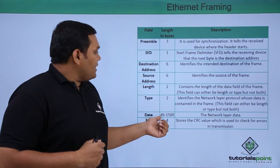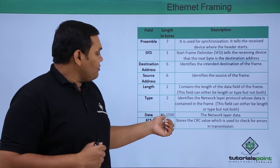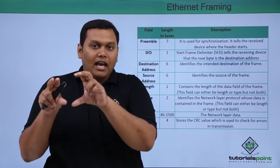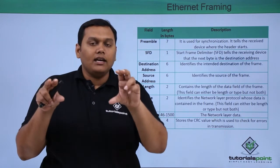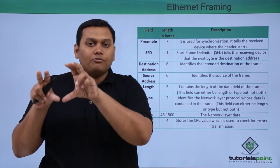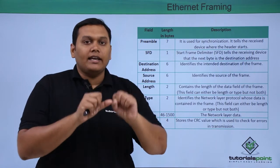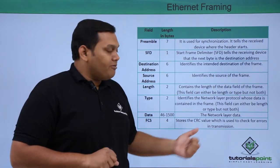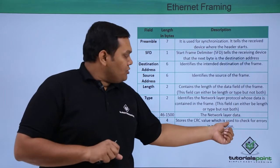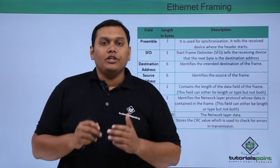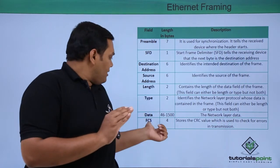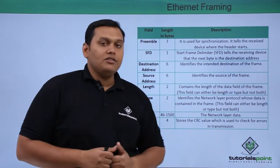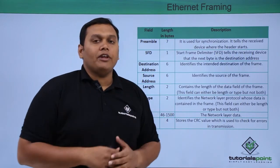The Data field holds between 46 to 1500 bytes of network layer data, containing details of the network layer protocols and functions. The FCS (Frame Check Sequence) stores the CRC value, which is used to check for errors in transmission, making it very useful for detecting transmission errors when transferring the frame.